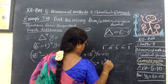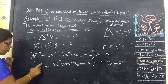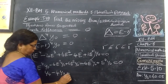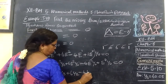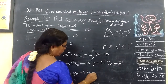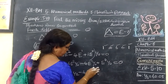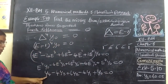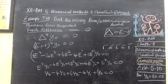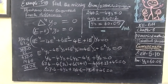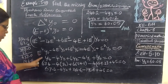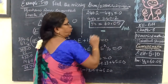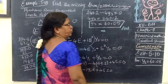Now substitute the corresponding values from the table. Adding the plus values and separating the minus values: 4y₃ = 240.2. Therefore, y₃ = 60.05. That is the answer.